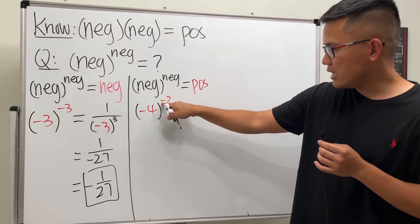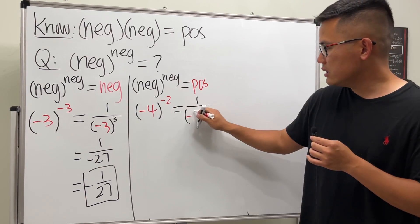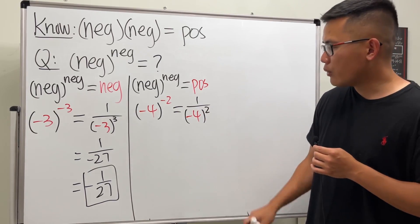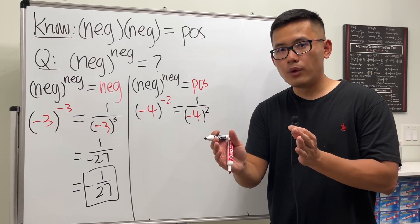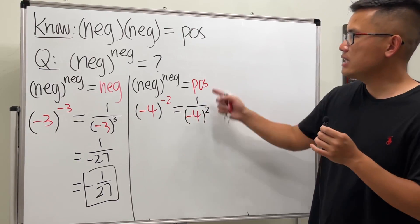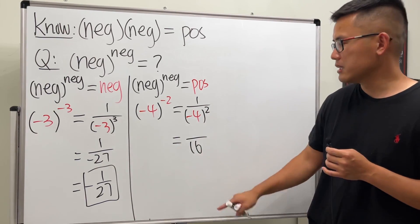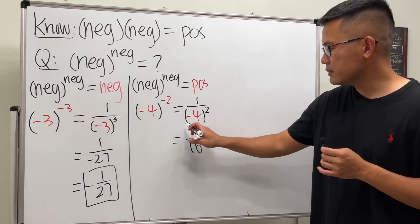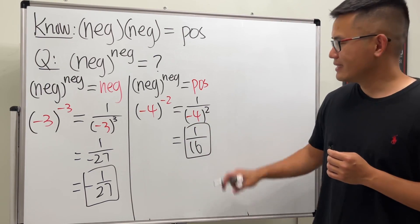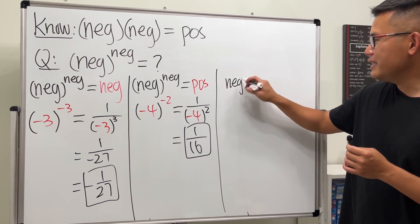Let's pick different numbers this time — negative four raised to a negative two power. Take care of the negative exponent first: we get one over negative four to a positive two power. Negative four times negative four — negative times negative is positive — we get positive 16 on the bottom and still have the one on top. One over 16 is positive, and we are done.